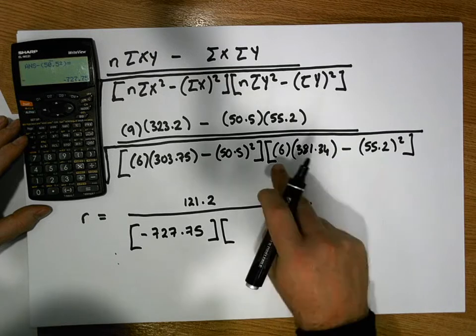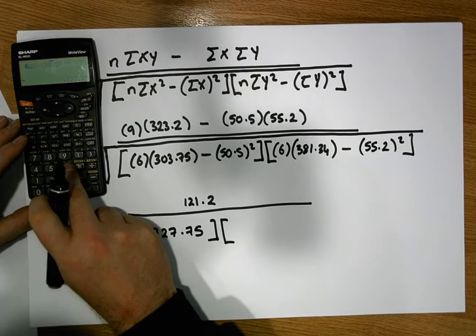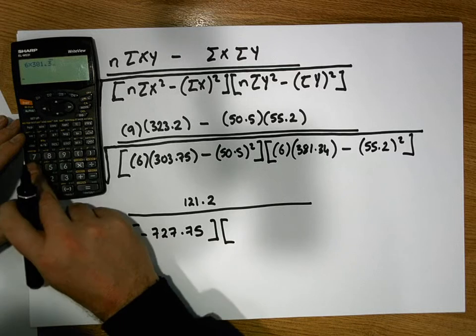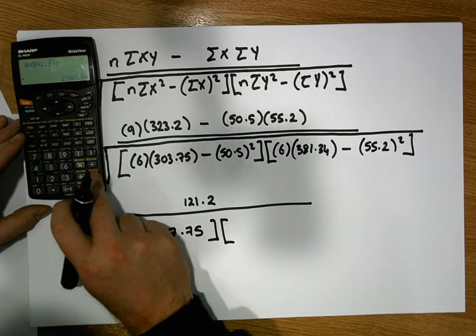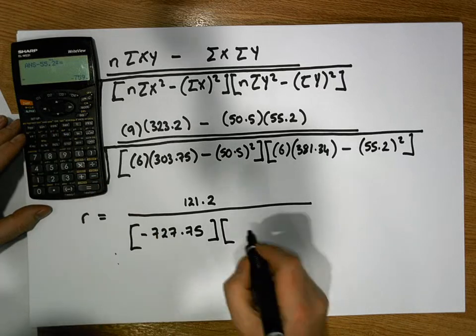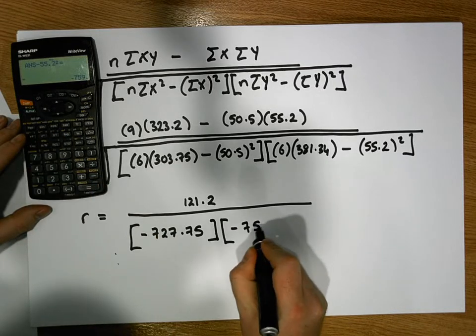And now let's do the right factor here. It's 6 times 381.34 minus 55.2 squared. That gives us a value of minus 759.